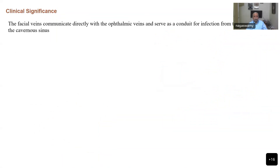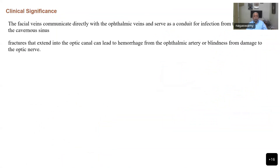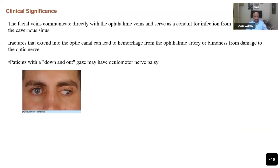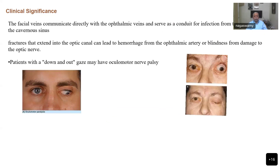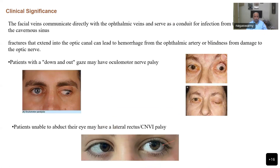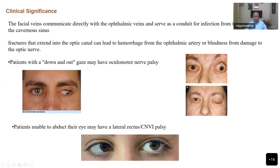Clinical significance: facial veins communicate directly with the ophthalmic veins, serving as a pathway for infection from the face to the cavernous sinus. Fractures extending into the optic canal can lead to hemorrhage from the ophthalmic artery, or blindness caused by injury to the optic nerve. Patients with a down-and-out gaze may have third nerve palsy and ptosis. Patients unable to abduct their eyes may have sixth nerve palsy. In sixth nerve palsy, the eye looks downward toward the midline because the lateral rectus is not working.